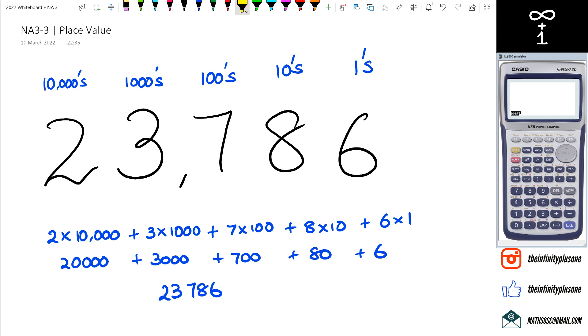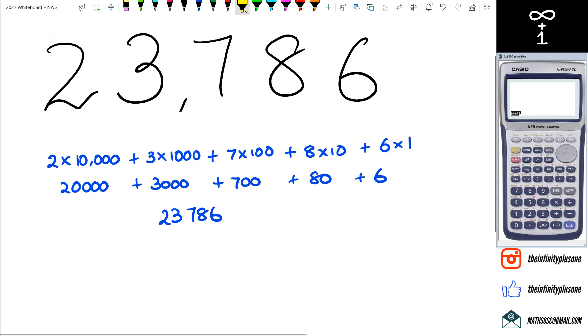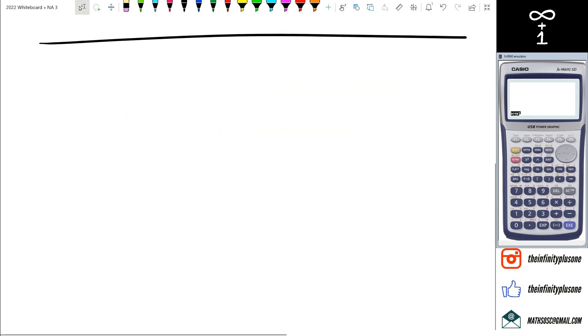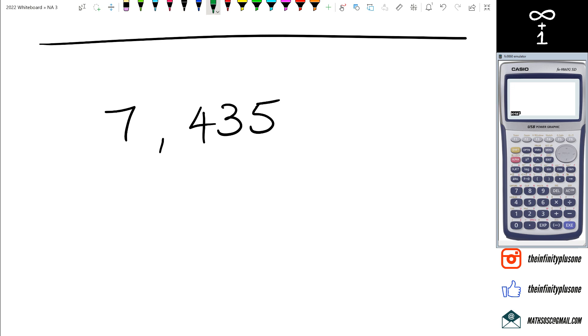So that's pretty much it. Let's just do a quick little example here. Say for example if I have 7,435, and if I say what is actually in the hundreds column, I can see straight away that that's equal to four.